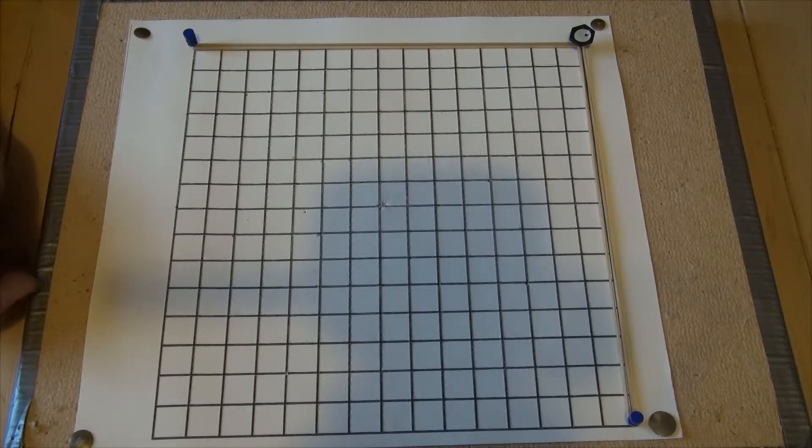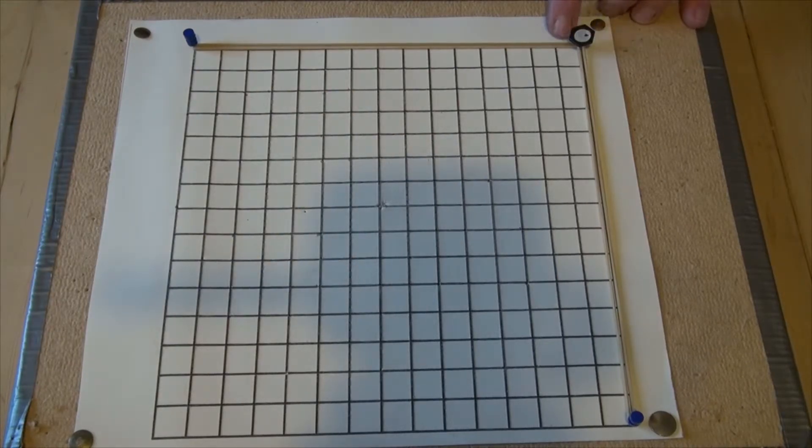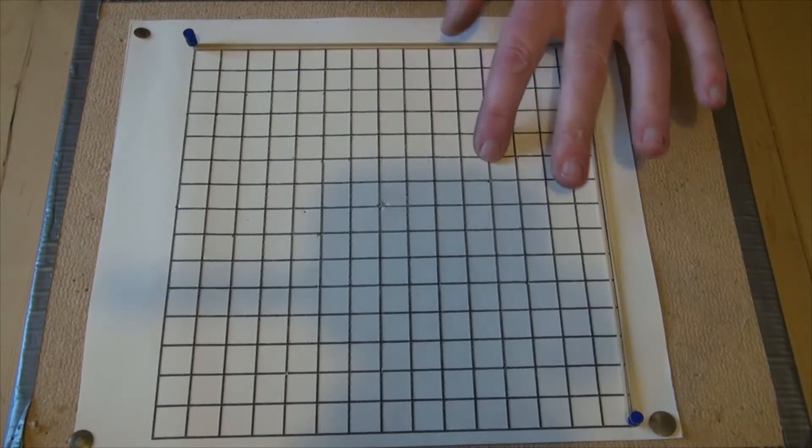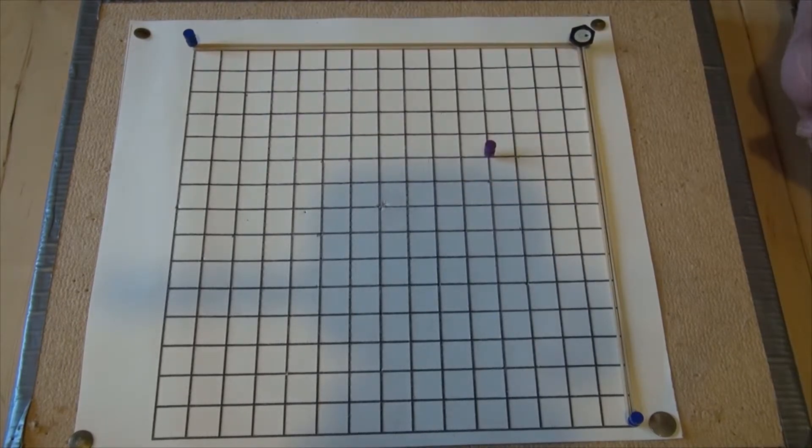If you'd like to plot the coordinate, let's say 4, 5, you count across 4. 1, 2, 3, 4, and up 5. 1, 2, 3, 4, 5. And pins go on crosses. That's to position 4, 5.